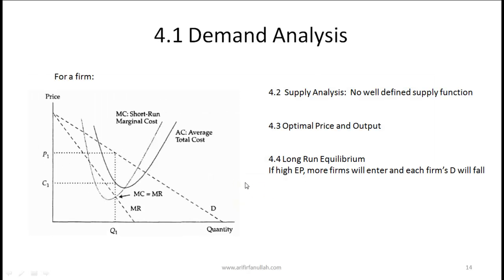Let's look at the demand analysis for monopolistic competition to get a sense for the optimal price and output. In monopolistic competition, firms face a downward sloping demand curve — if the price is set too high nobody will buy your toothpaste, and as price is reduced demand goes up. The marginal revenue curve is steeper than the demand curve, with the same y-axis intercept.